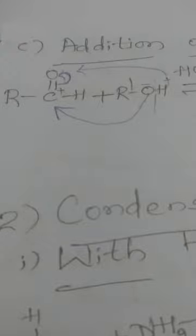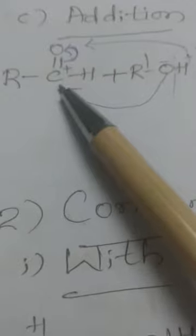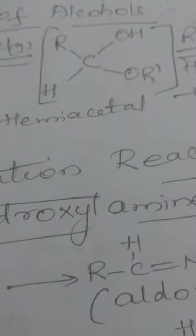In the first step, aldehyde RCHO reacts with one molecule of alcohol R'OH. The carbonyl group being polar forms C⁺ O⁻. R'OH undergoes homolytic bond fission to form H⁺ and the alkoxy group R'O⁻. H⁺ forms a bond with O⁻ giving C–OH, and C⁺ bonds with OR'. This product is called a hemiacetal with formula RCHOH–OR'.